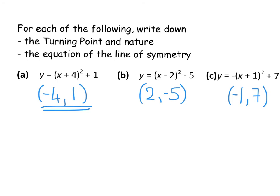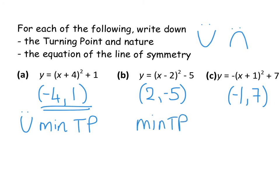The nature asks: is it a smiley face (minimum) or sad face (maximum) turning point? That's based on whether it's a positive or negative X squared. The first example gives a positive X² when you multiply out the bracket — so it's a minimum turning point. The second also gives positive X² — also a minimum. The third has a negative sign in front, so multiplying out gives a negative X², meaning it's a sad face — a maximum turning point.